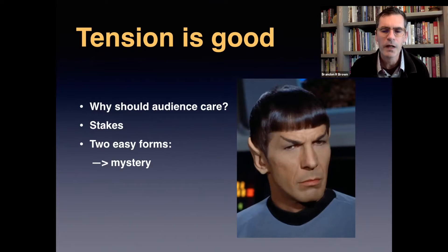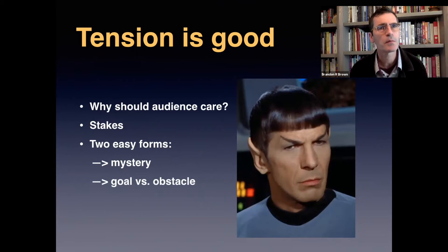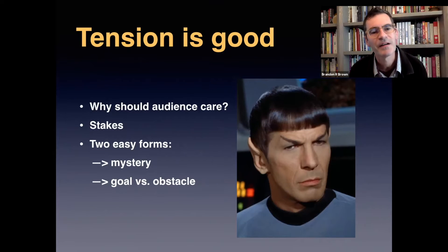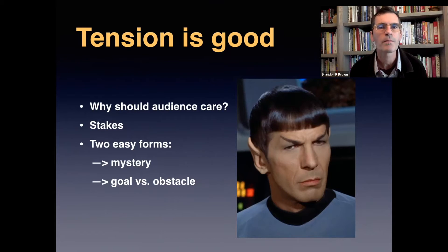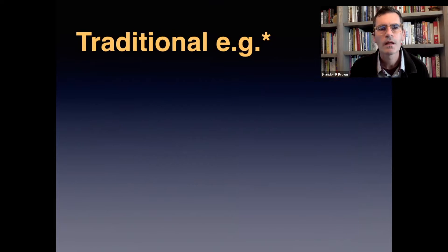Another way a good writing professor pitched it to me is to think about a character — and I would submit that you broaden your sense of what a character is. A character could be a molecule, a regulation, an agency, a company. Broaden our sense of character, but there's a goal versus an obstacle. Odysseus wants to get home. Odysseus faces many, many obstacles.